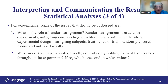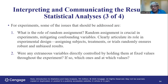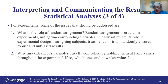For experiments, some issues that should be addressed include the role of random assignment. That means we should randomly assign the participants into two different groups. When comparing a new drug with a control, the volunteers participating in the study should be randomly assigned — without any preference — to the two groups. Clearly articulate the role of random assignment in experimental design. Assigning subjects to treatments randomly ensures robust and unbiased results.